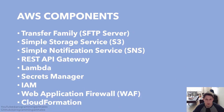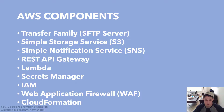The AWS components we're going to be working with are quite exhaustive, but they link together very easily. We have Transfer Family, which stores the SFTP server. Simple Storage Service, S3, which stores the documents presented to the end user. Simple Notification Service, which sends email notifications when a file is uploaded. REST API Gateway and Lambda, which are our authentication providers. Secrets Manager, which stores the credentials. IAM, which has different policies and user roles for base and admin users. Web Application Firewall to restrict IP access at the server level. And finally, CloudFormation, which will allow us to set up all these AWS components automatically in code, instead of going to the AWS Management Console and clicking through to create them manually.